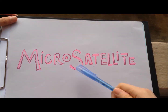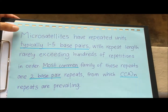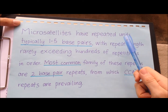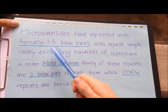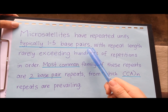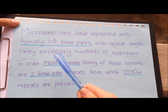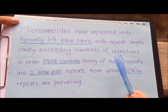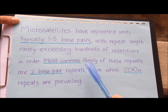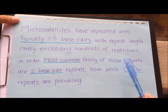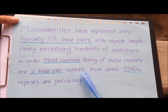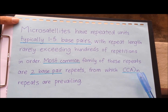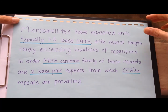Microsatellites have repeated units, typically 1 to 5 base pairs, with repeat length rarely exceeding hundreds of repetitions in order. The most common family of these repeats are 2 base pair repeats, from which CA repeats are prevailing.